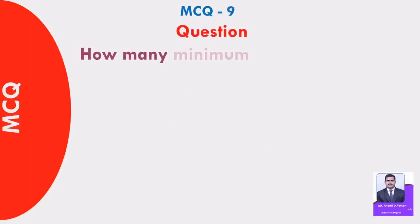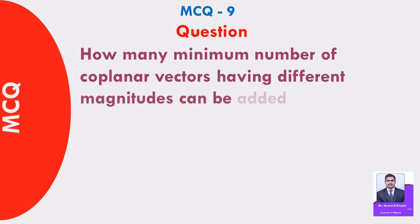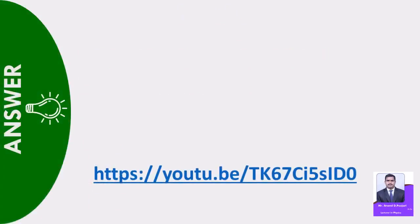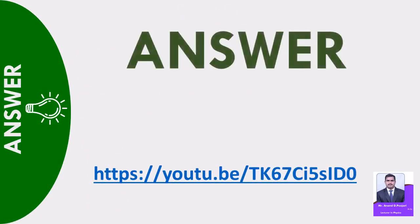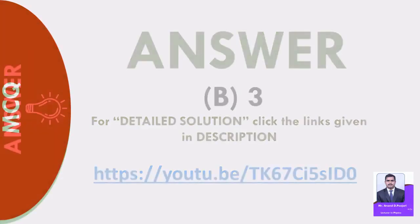MCQ 9: How many minimum number of coplanar vectors having different magnitudes can be added to give zero resultant? A) 2, B) 3, C) 4, D) 5. Answer: Option B — 3. For detailed solution, click the links given in the description below.